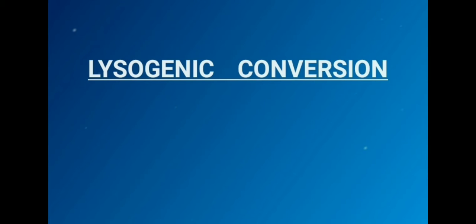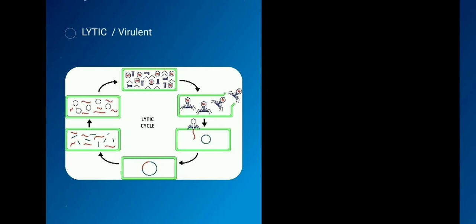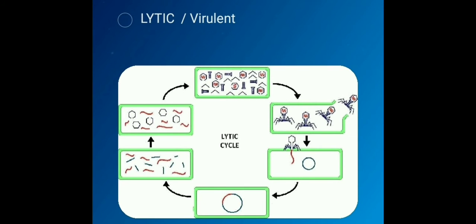Genetic transfer, the lysogenic conversion. Bacteria phages have two types of life cycle: lytic cycle and lysogenic cycle. In this case, a large number of progeny phages are formed inside the host cell. Progeny phages means baby phages.